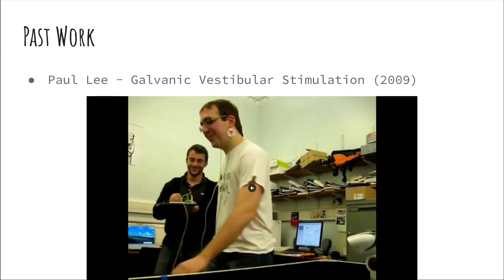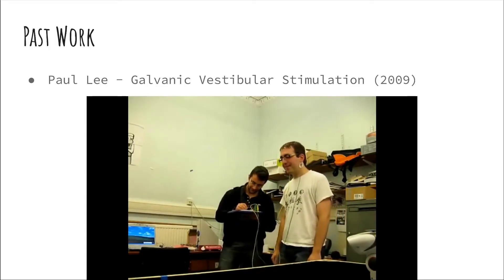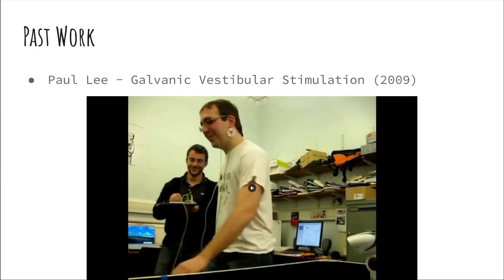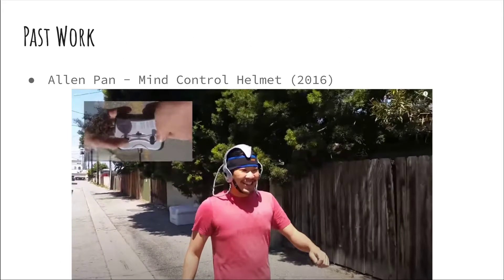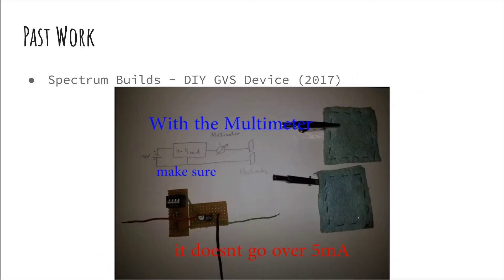In 2009, a YouTuber by the name of Paul Lee posted an experimental GVS device that he had constructed on a breadboard. The device required a wired connection to the subject, but it looks like it worked pretty well. In 2016, Alan Pan built a mind control helmet that used galvanic vestibular stimulation — his device utilized a small RC toy remote control. And finally, in 2017, Spectrum Builds posted a small GVS circuit to YouTube.